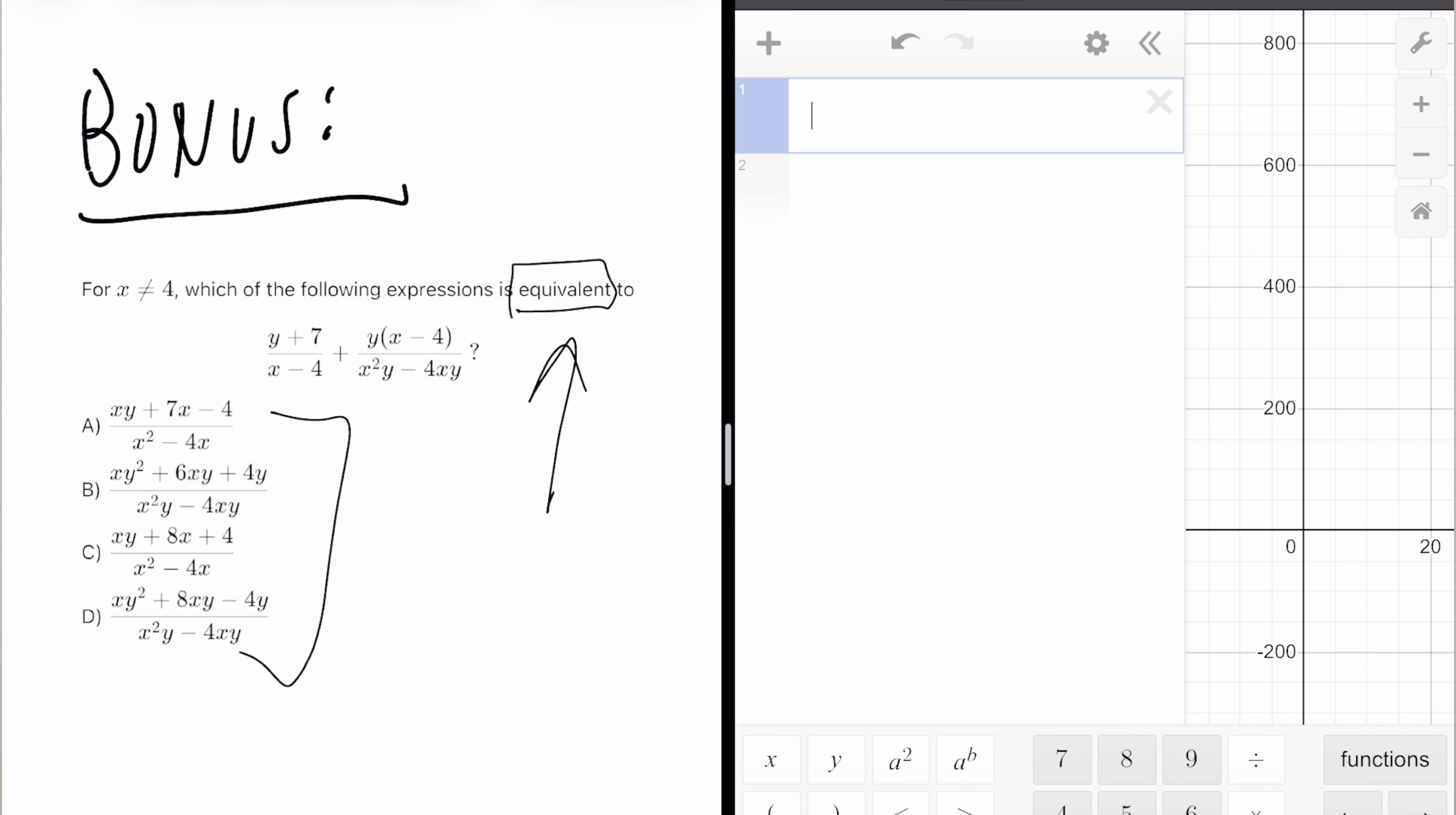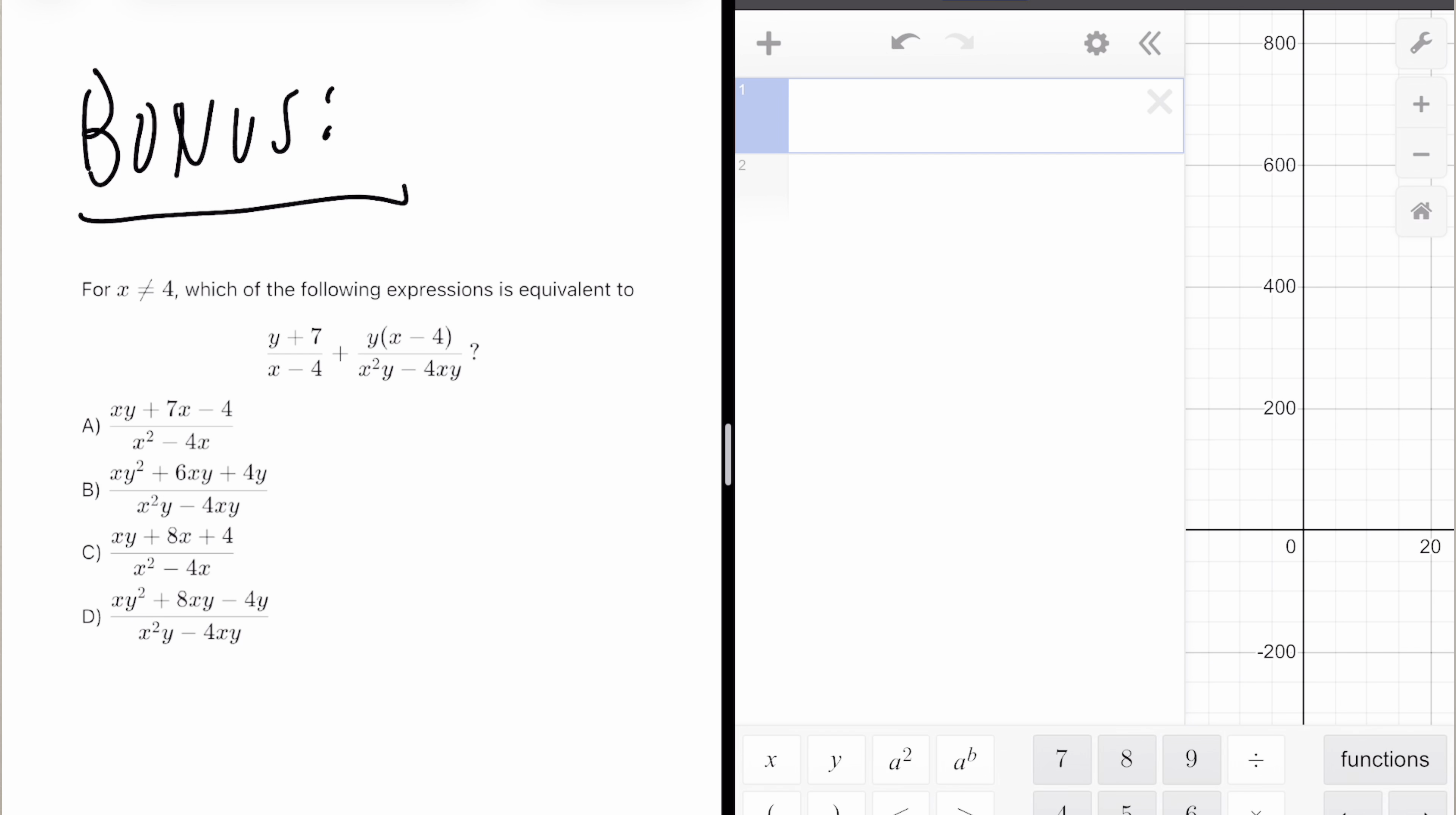So in a math class, typically, you would try to add these fractions together, simplify it down completely. But a lot of these aren't even simplified. And the correct answer is actually not fully simplified. So what I'd do, because it's very easy to do a lot of work, spend a lot of time and not even get to the correct answer, is put all of these four into Desmos. And whichever graph, either A, B, C, or D, line up with the given graph, that is your correct answer. That's it. Let me show you how that works.